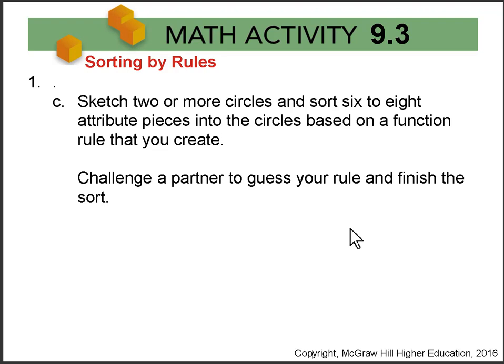Now in Part C, sketch two or more circles and sort pieces into them based on a function rule that you create, and challenge a partner to guess your rule and finish the sort. Notice that it says two or more circles. When you're using attribute pieces, you can easily have more than two circles when you're creating function rules.